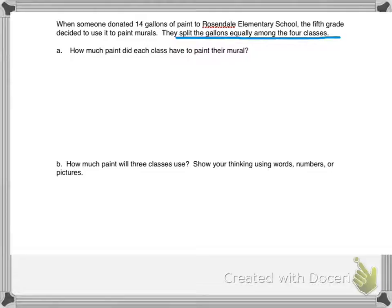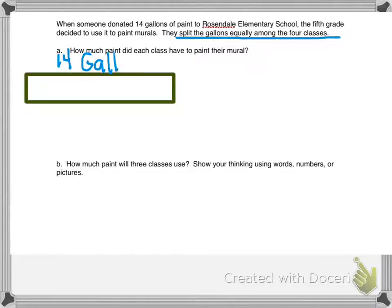When it says it's splitting it equally, I know that I have to divide. What can I draw? I can use what I know from my previous lessons, and I can draw a tape measure. Now this tape measure is going to equal 14 gallons. Now it says how much paint did each class have to paint their mural? So I know there are four classes, so I'm going to partition my tape measure into four.